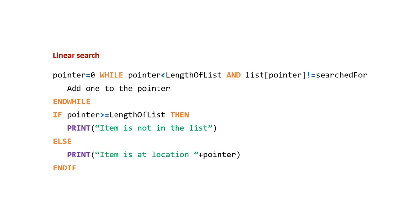Now let's look at the pseudocode for a linear search. Pause the video and work through this code carefully in your head. Make sure you understand what each line is doing. Try copying each line down as you work through the algorithm — this step is very important, don't skip it. Once you are happy with the basics of the algorithm, unpause the video.